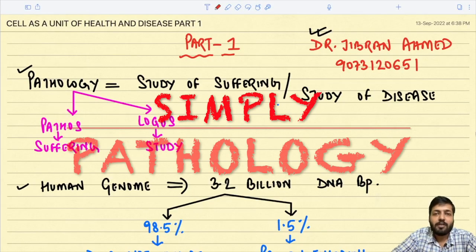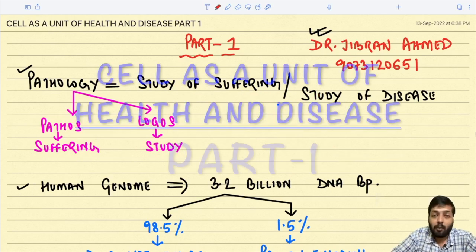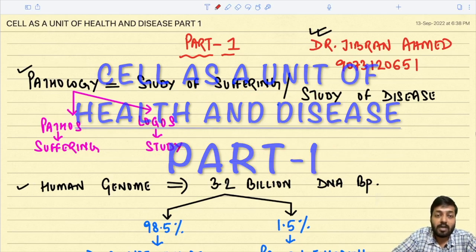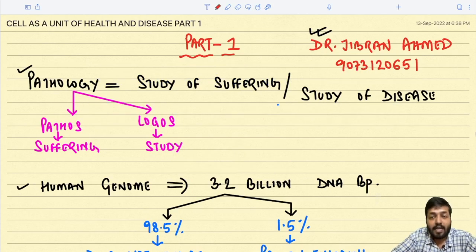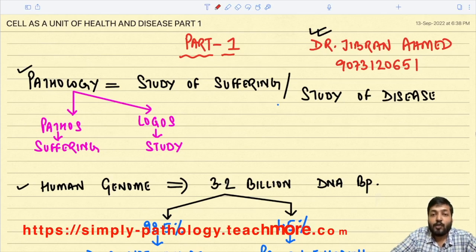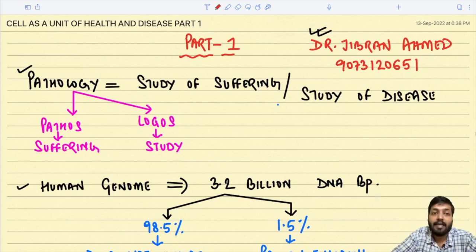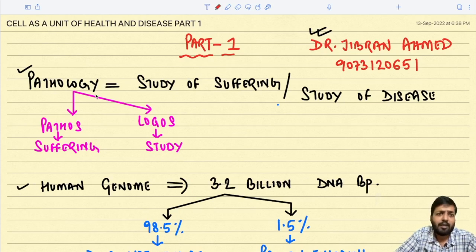Dr. Gibran Ahmad presents Simply Pathology. Today we are back with a very important lecture — we are going to read about Chapter One of Robbins: 'Cell as a Unit of Health and Disease.' This is an updated version of the chapter. For those new to the channel, welcome to Simply Pathology.